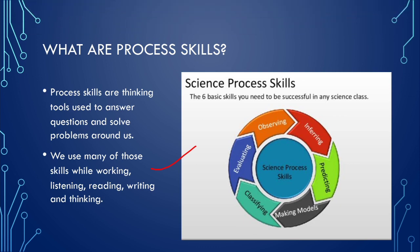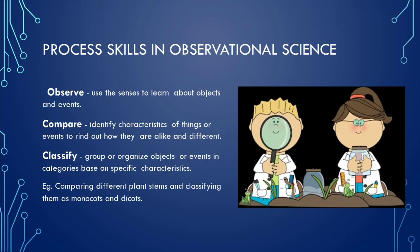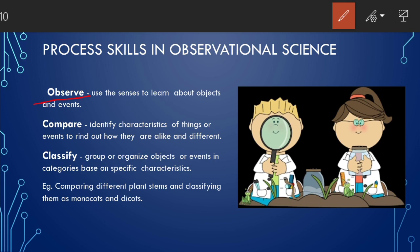Let us now discuss the first set of process skills used in observational science. Those are observe, compare and classify. I will explain this with an example. We have already studied that in observational science if we take TS of plant stems and classify them according to monocots and dicots then that will become observational science. Here we are using certain process skills like first we are observing the arrangement of vascular bundles and tissues in the plant stem. Then we are comparing with different plants, different plant species belonging to different classes, different families.